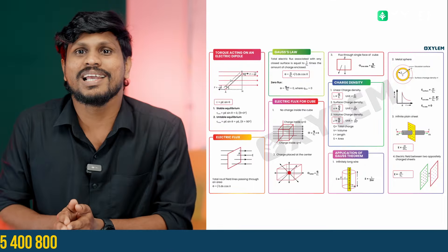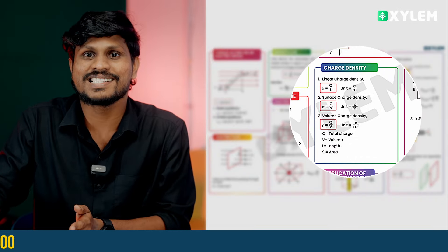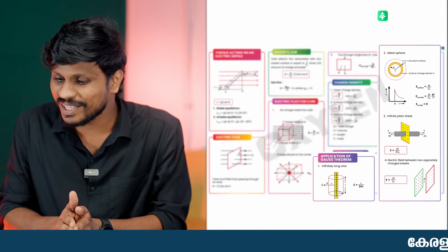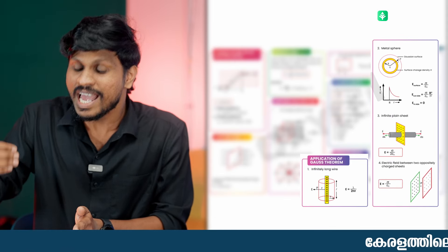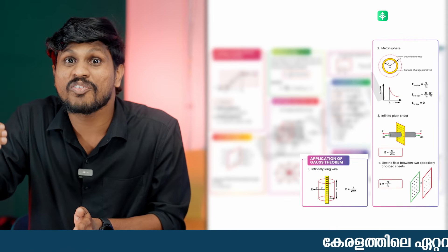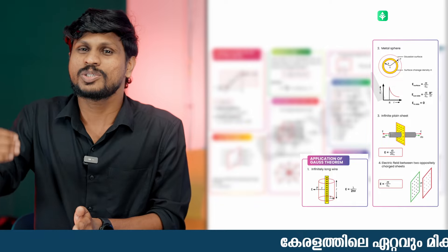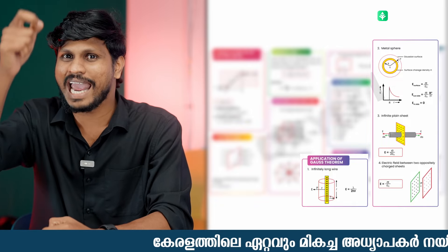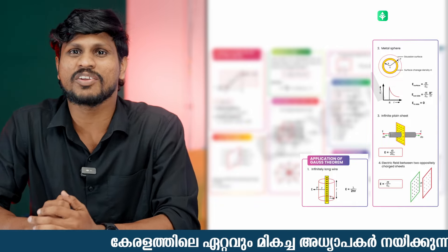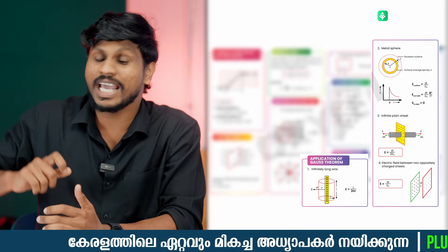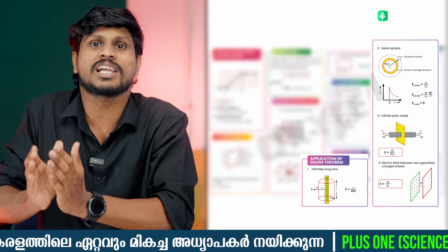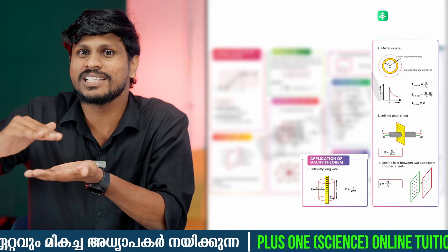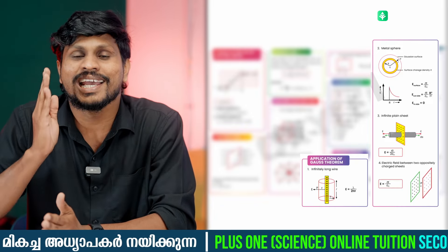Then we want to discuss the charge density. The charge density — a very important thing — has 3 applications: a line-shaped object producing electricity, a spherical shell producing electricity, and a plain sheet producing electricity. We are going to take a look at the figure.